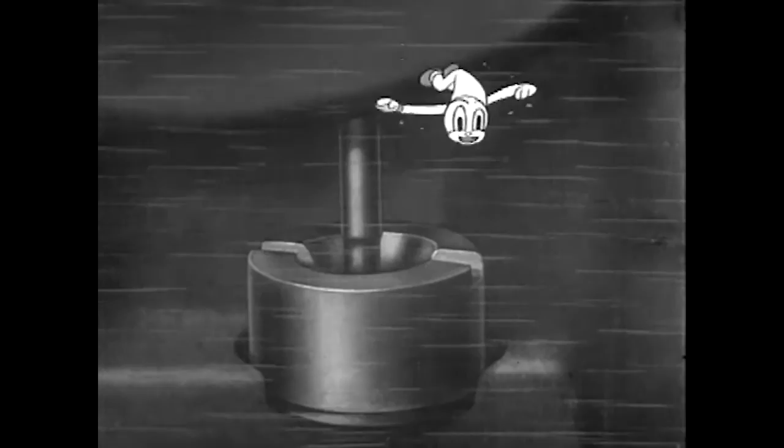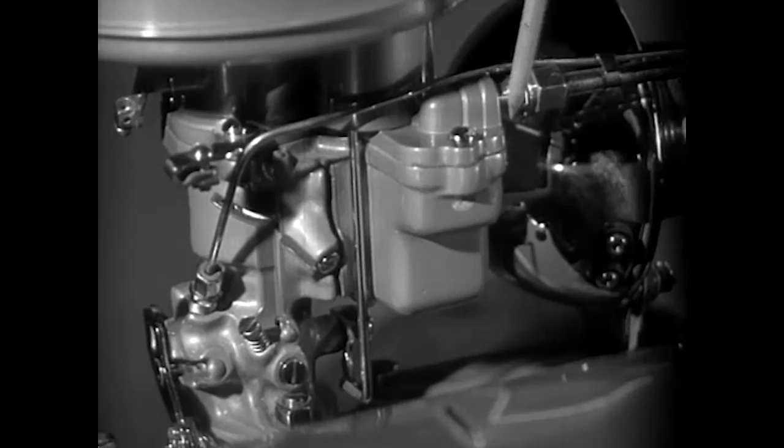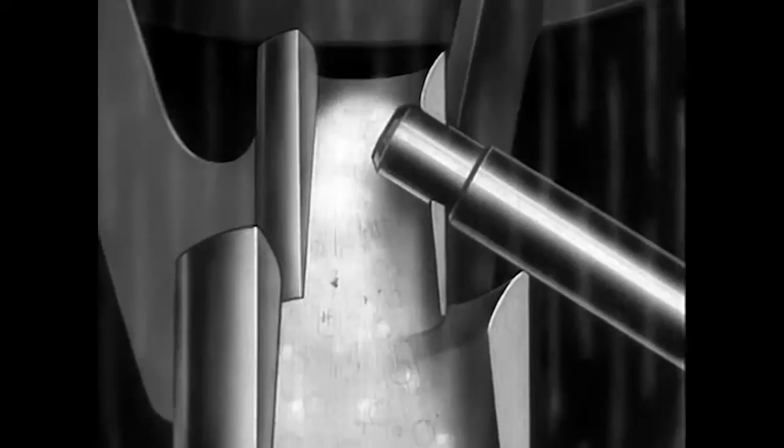We just came through the needle valve that lets the gasoline into the carburetor. That is the float on top of the gasoline. It controls the needle valve, keeping just the right amount of gas here in the bowl of the carburetor. Hey, there goes our drop again. He's going down through the metering jet at the bottom, but he's still in the carburetor.